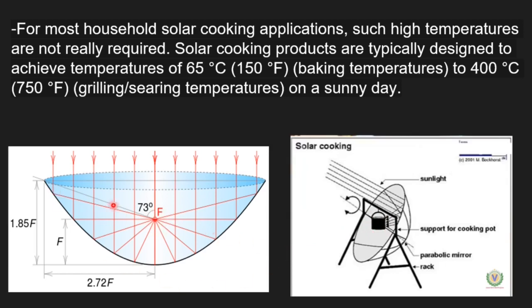In the case where the rays that enter are not perpendicular to the lateral circular surface, the rays are concentrated again at a point — but not at the focus, rather at some other point on the focal plane. Accordingly, we need to move the mirror or the cooking utensil to concentrate the heat on the cooking vessel. This method is also known as image tracking.